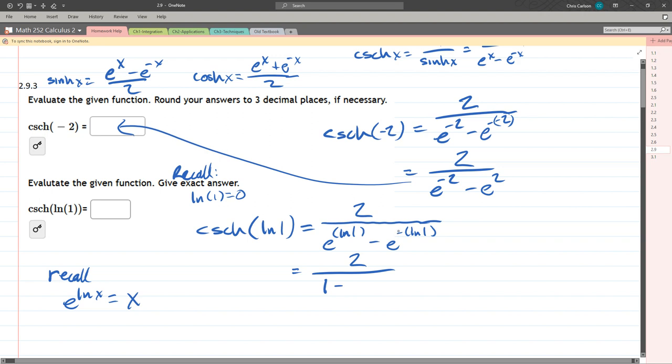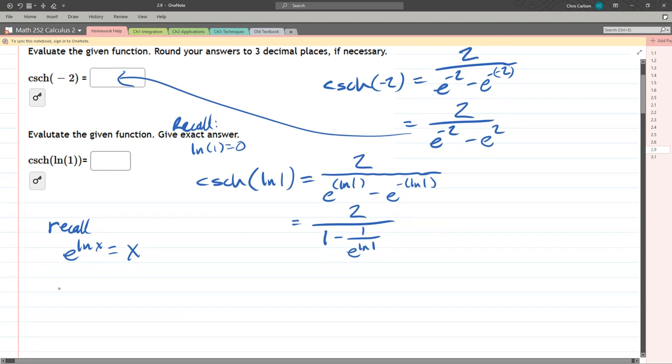One of them is I could write it as 1 over e^(ln(1)). Because that's what a negative does. It reciprocates. There's another rule that you can use, which is a·ln(x) equals ln(x^a). And you might be thinking, well, there's a negative out front. That's fine. That negative means -1 times ln(x), which is ln(x^(-1)).